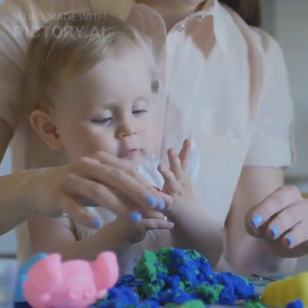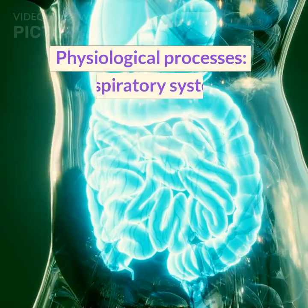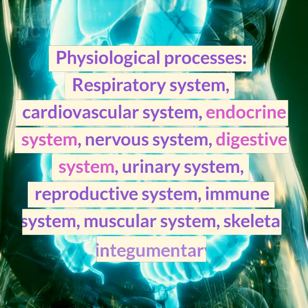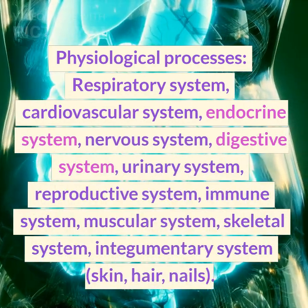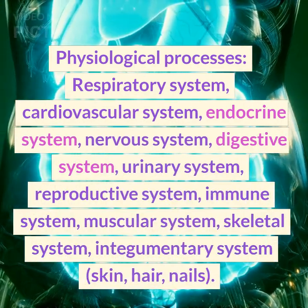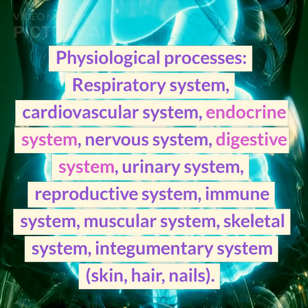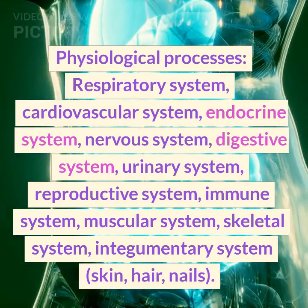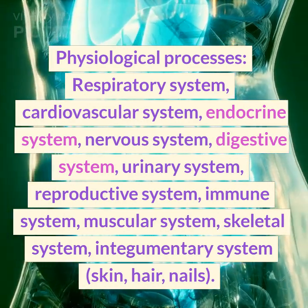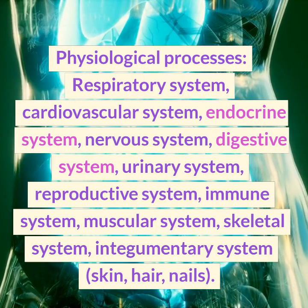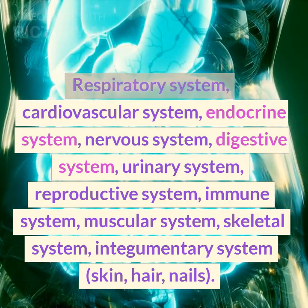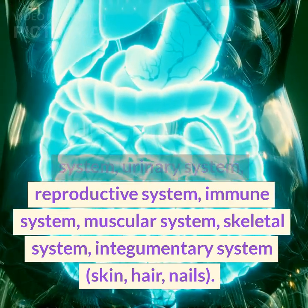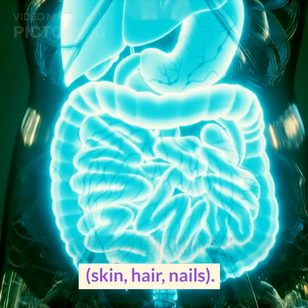2. Physiological processes: respiratory system, cardiovascular system, endocrine system, nervous system, digestive system, urinary system, reproductive system, immune system, muscular system, skeletal system, integumentary system — skin, hair, nails.